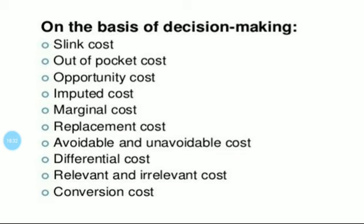Fifth, marginal cost. Marginal cost is the additional cost of producing an additional unit — it is the extra cost for producing one additional unit. Sixth, replacement cost. Replacement cost is a term referring to the amount of money a business must currently spend to replace an essential asset, like real estate property or an investment security, with one of the same or higher value. That means it is the cost incurred for replacing an existing asset.